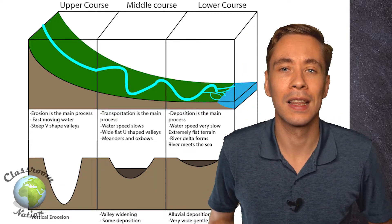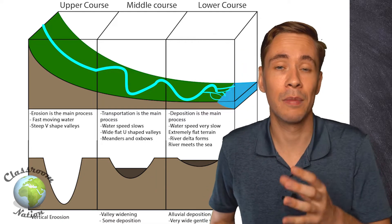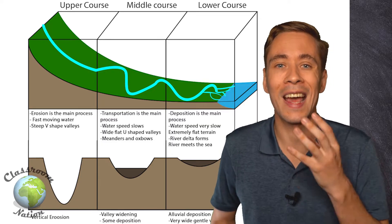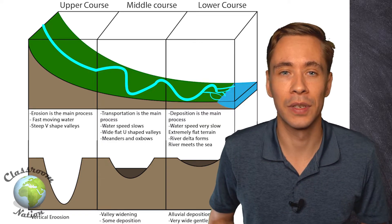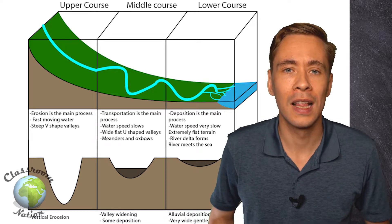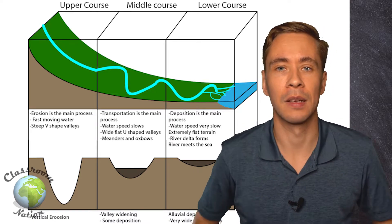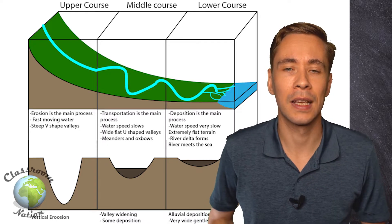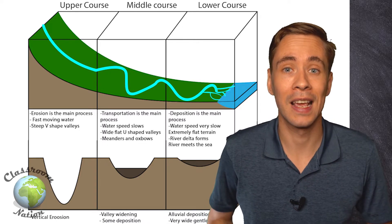This V-shape reduces the lag time, which is the time it takes for the water to reach the river from when it enters the system as precipitation. Due to the fast-flowing water, there is lots of erosion taking place — erosion is the main process in the upper course. It can create some very interesting features such as waterfalls, rapids, and deep gorges.